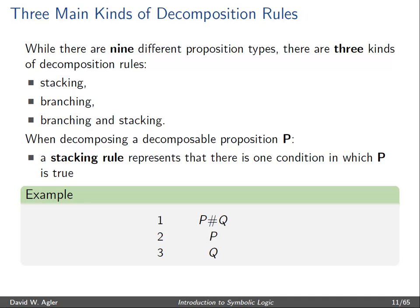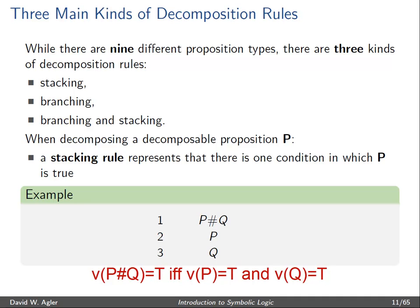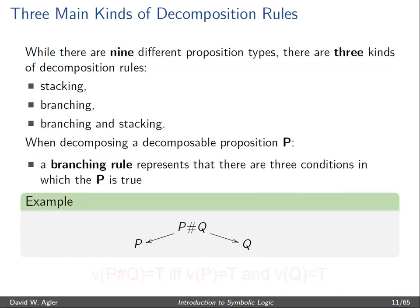So if we had some random formula, let's say P hash Q, a stacking rule would stack formulas underneath P hash Q in order to represent the conditions under which that formula is true. So what this example illustrates is that P hash Q is true if and only if P is true and Q is true.